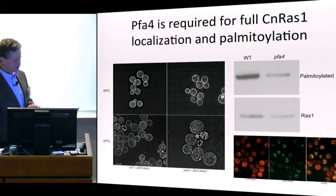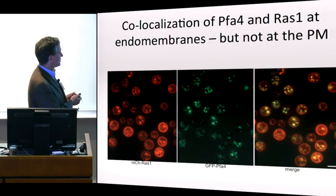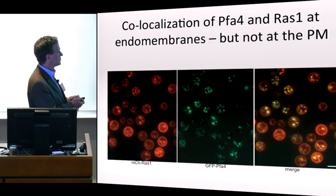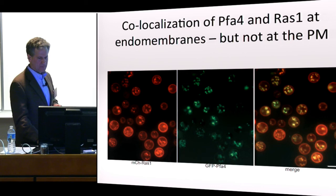To back this up, when we look at the localization of PFA4: this is an mCherry-tagged RAS present at endomembrane structures and also the plasma membrane. When we look at where GFP-PFA4, the palmitoyl transferase, is located and then merge them together, it's present exactly where RAS is — at those internal membrane structures where you'd predict it is performing its palmitoylation to send RAS out to the plasma membrane. This further suggests, and confirms the biochemical result, that PFA4 truly is the predominant RAS1 palmitoyl transferase.